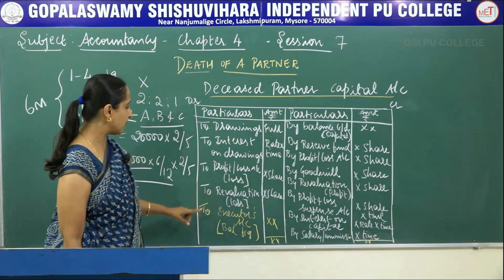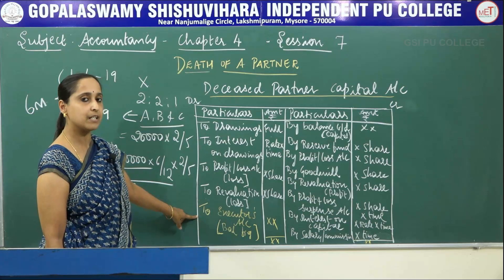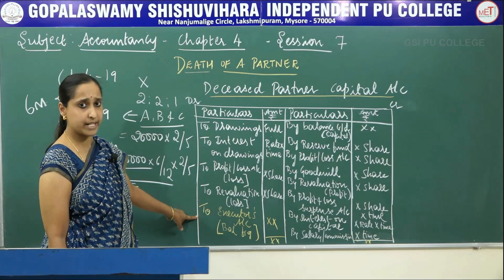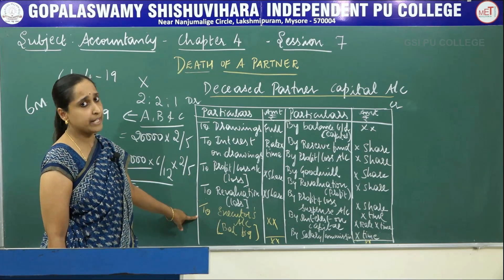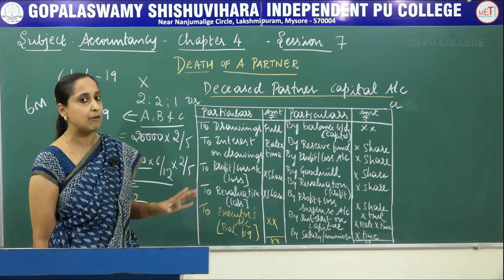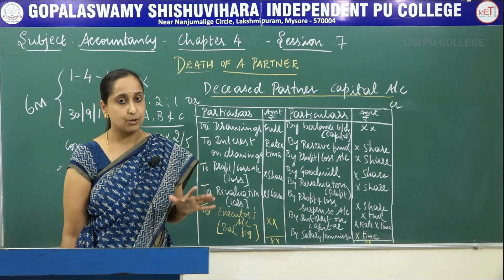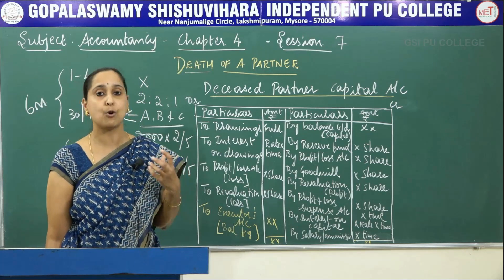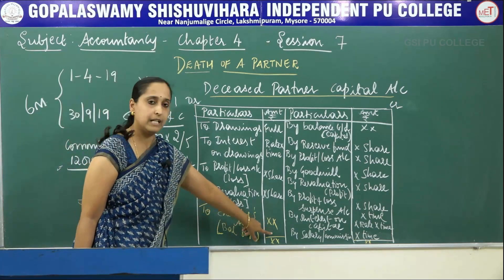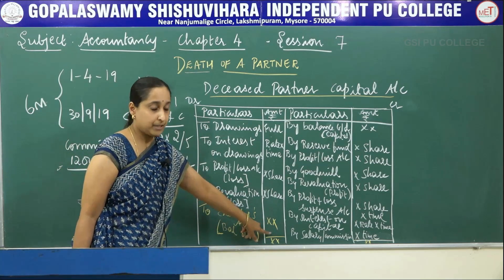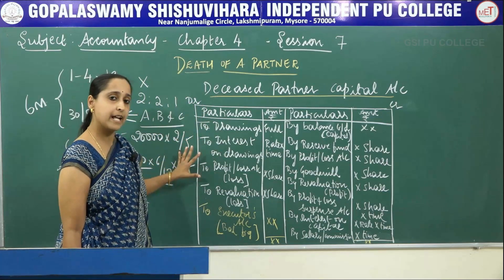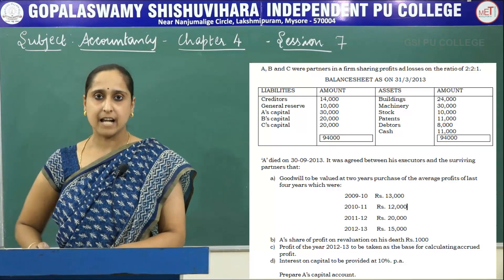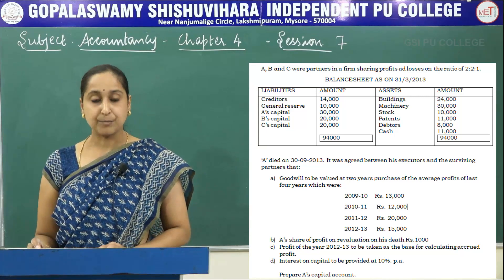After recording all these items, you balance the account — debit and credit. Whatever balance you get, that amount will be transferred to the Executor's Account. The executor is the legal representative of the deceased partner, and this is the deceased partner capital account.